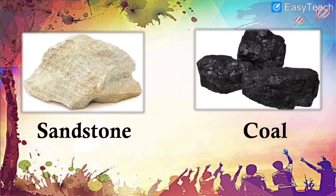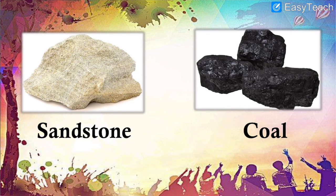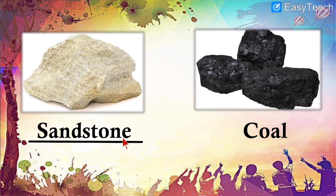Now see number three and number four. Over here you can see a hard surface object, and same over here — but both look very, very different from each other, and so are their names different. The third type of rock: S-A-N-D-S-T-O-N-E — Sandstone. You just mix up the two spellings: sand and stone — that becomes a compound word, sandstone.